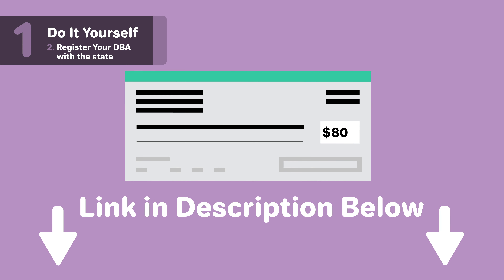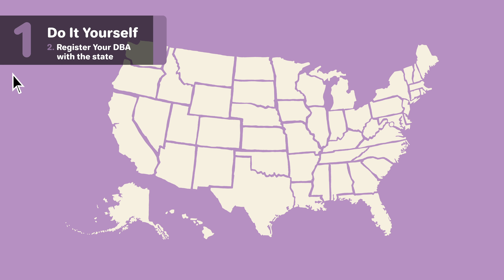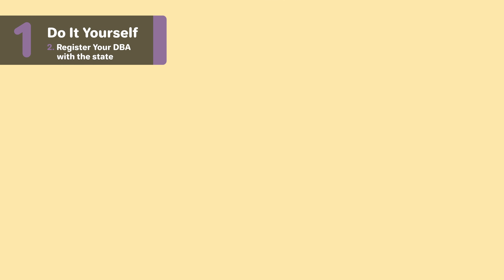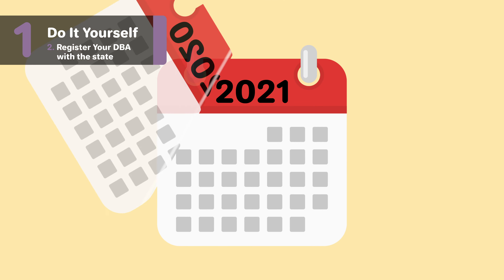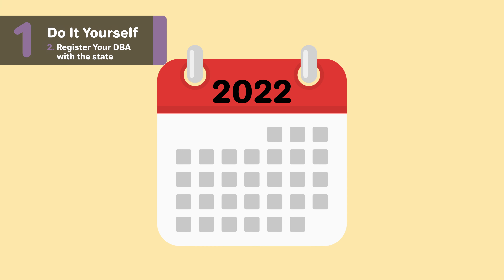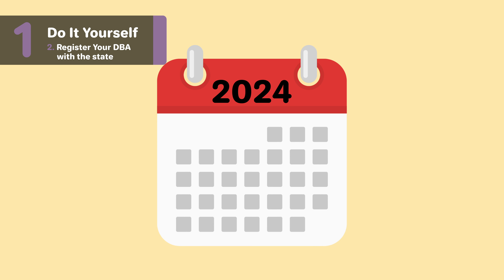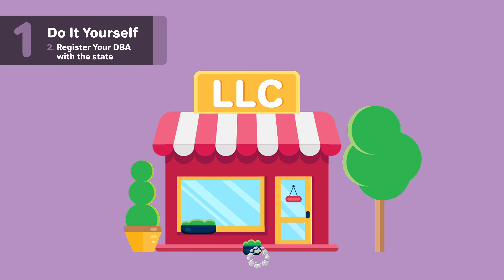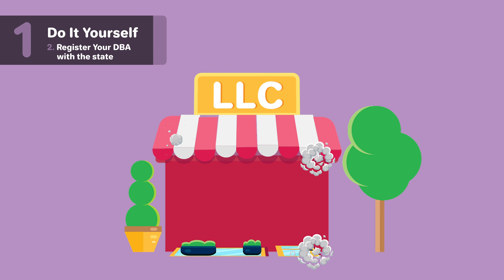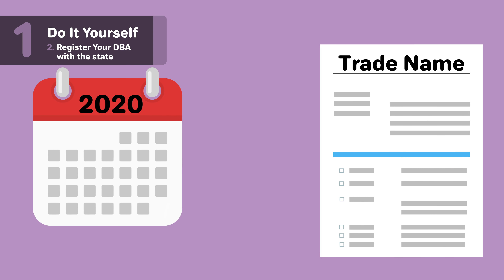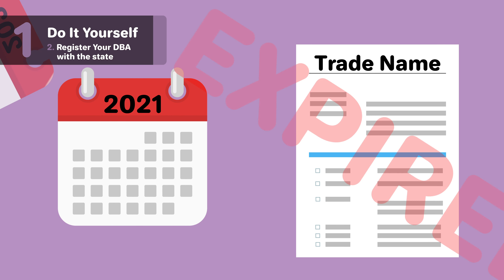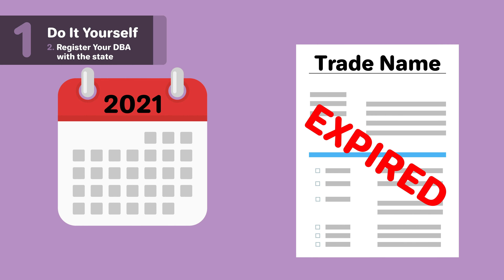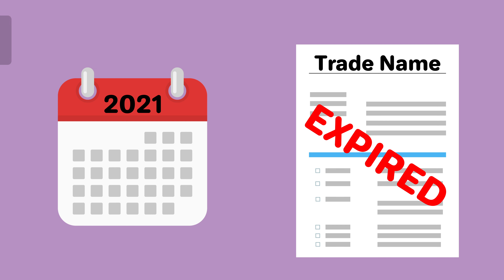Filing fees vary, so check out our pages linked below for more detailed information. With that, you'll have a DBA in Colorado. Keep in mind that your Colorado DBA needs to be renewed after the one-year filing anniversary if you have a sole proprietorship or general partnership. Trade names for LLCs and corporations do not expire unless the company falls out of good standing — if they do, the trade name will expire after one year. You can either renew online or complete the business name renewal form.